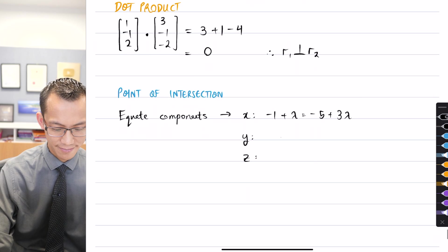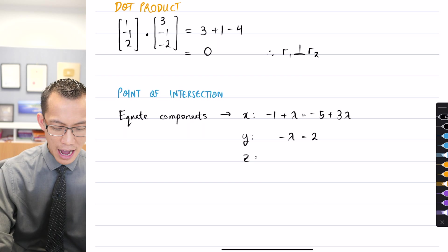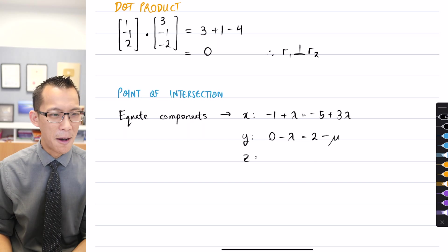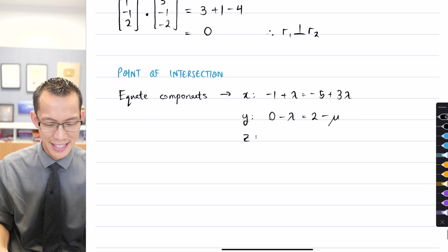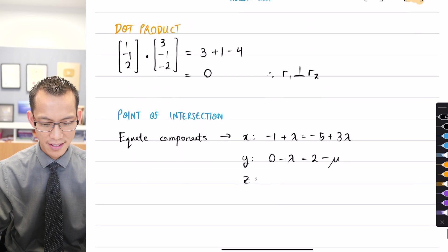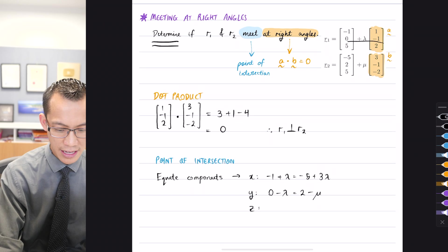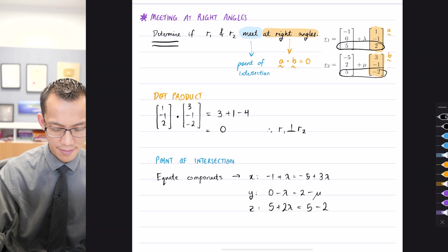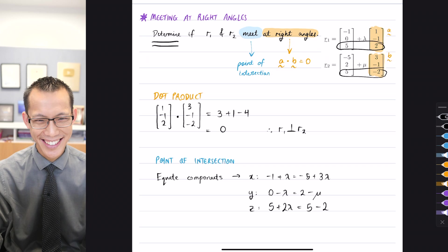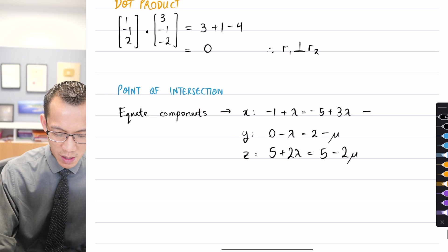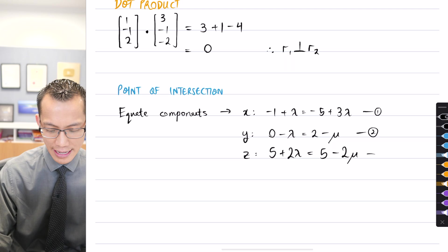Equating the components gives meaning to all the equations that are flying around. I'll have an x and a y and a z. From the x components: -1 + λ = -5 + 3μ. From y: -λ = 2 - μ. And from z: 5 + 2λ = 5 - 2μ. There's a lot of Greek letters flying around. So I've got equation one, equation two, and equation three.